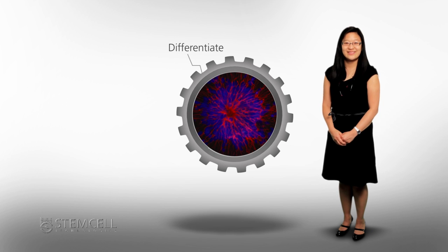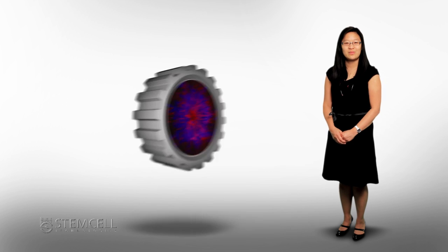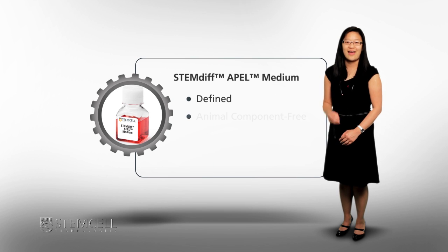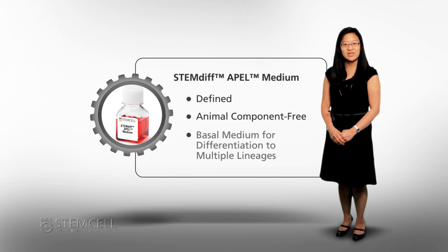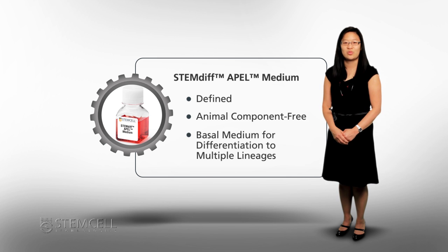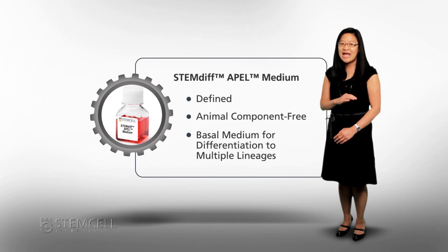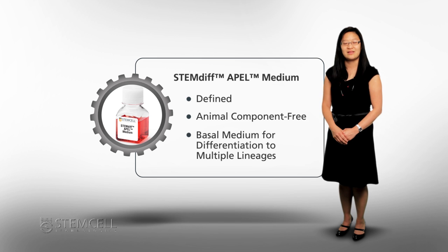Our first product, developed by StemCell Technologies and based on the published formulation, StemDiff APEL Medium, is a defined and animal component-free basal medium that can be used in a variety of differentiation protocols. With the right combination of growth factors, pluripotent stem cells can be differentiated to virtually any desired cell lineage.